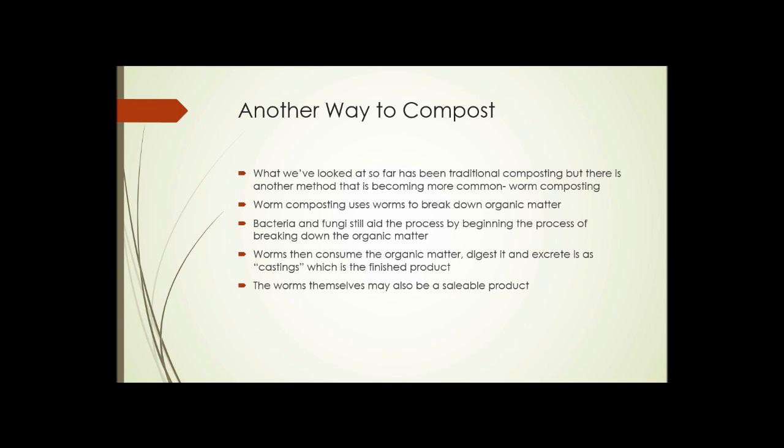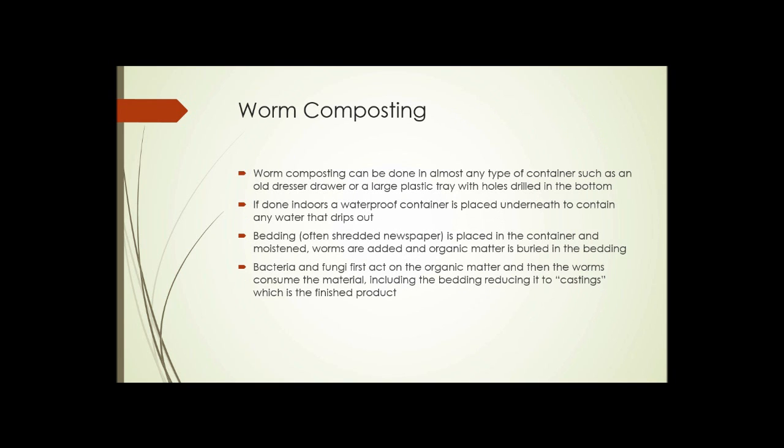In addition, the worms themselves may also be a saleable product. You can sell worms to fishermen, to people who might want to put them in their garden, or to people who might want to do worm composting. Worm composting can be done in almost any type of container, such as an old dresser drawer or a large plastic tray with holes in the bottom. But if done indoors, a waterproof container is placed underneath to contain any water that drips out. Usually the organic matter that we're adding, the plant debris, contains a lot of water. And as it's being broken down by the fungi and bacteria and then by the worms, this water comes out and can drip through the material. So some sort of waterproof container underneath helps hold that water.